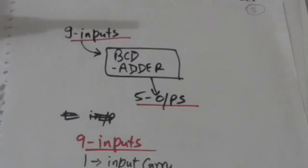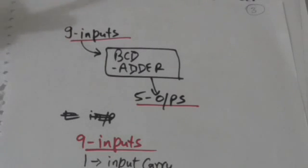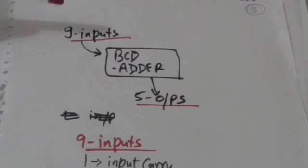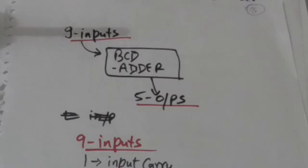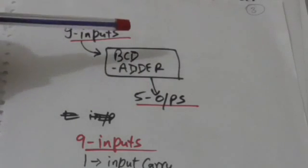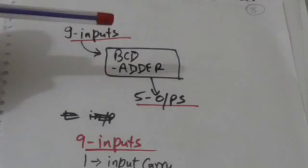A BCD adder must have 9 input variables and 5 output variables. There is one input variable for the input carry, and since in BCD a decimal digit is represented by a 4-bit binary number, two decimal digits represented in BCD require eight more input variables. It must have 5 outputs — one for the output carry and four for a decimal digit represented in BCD.